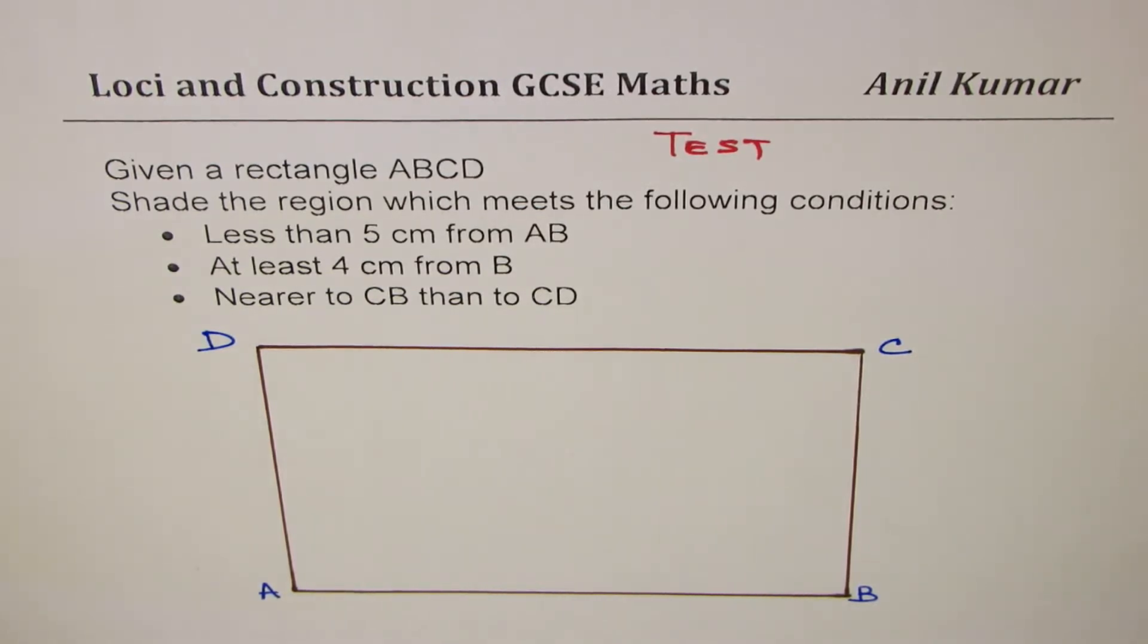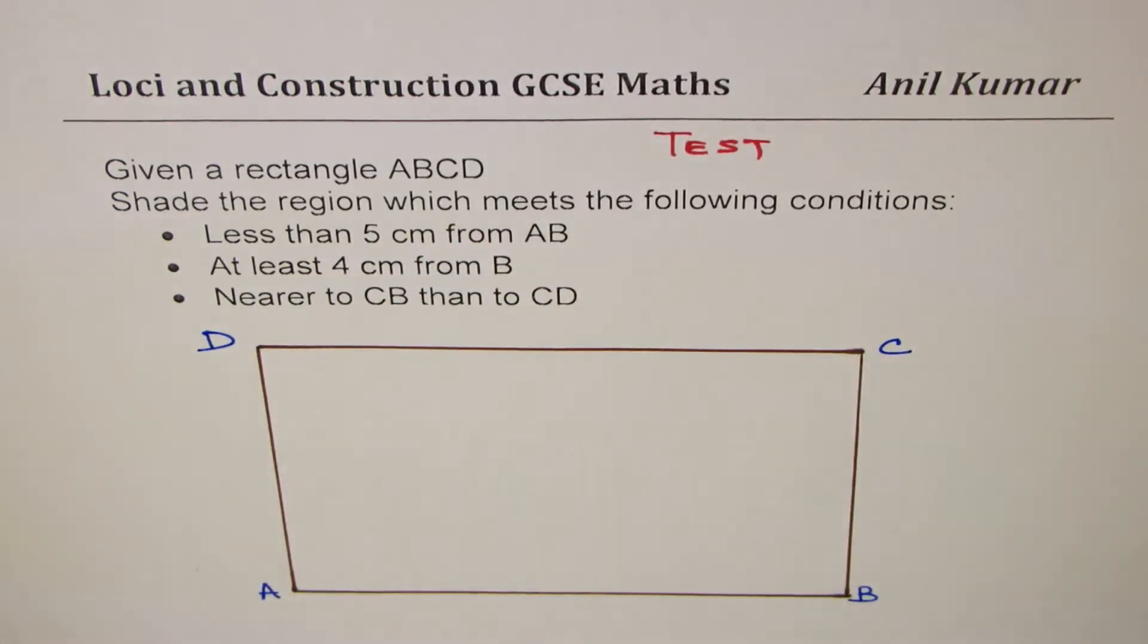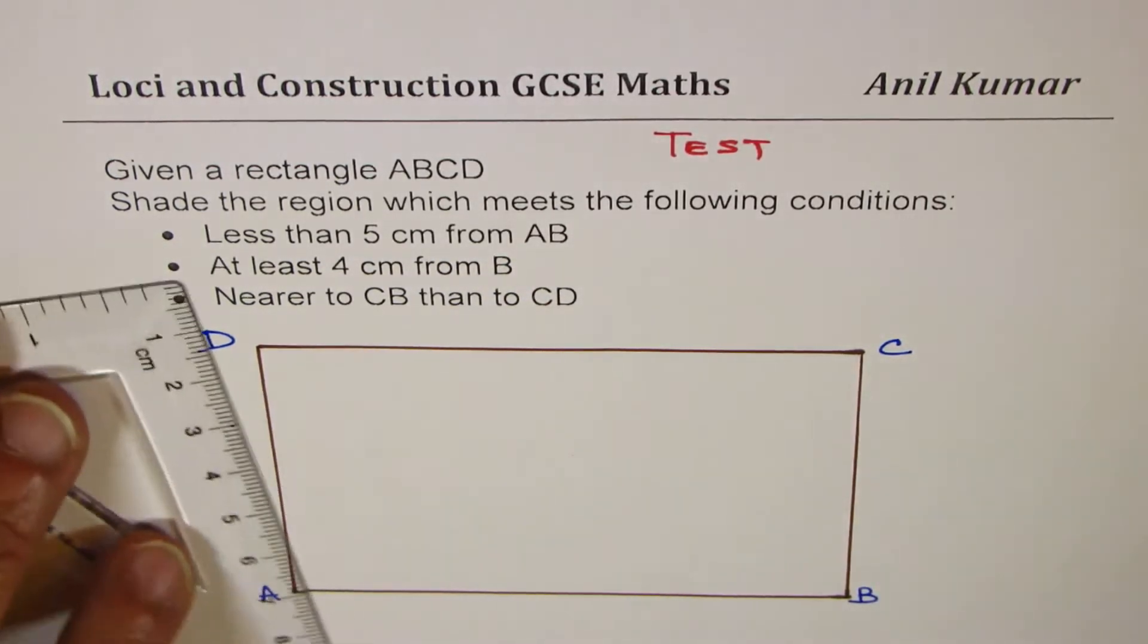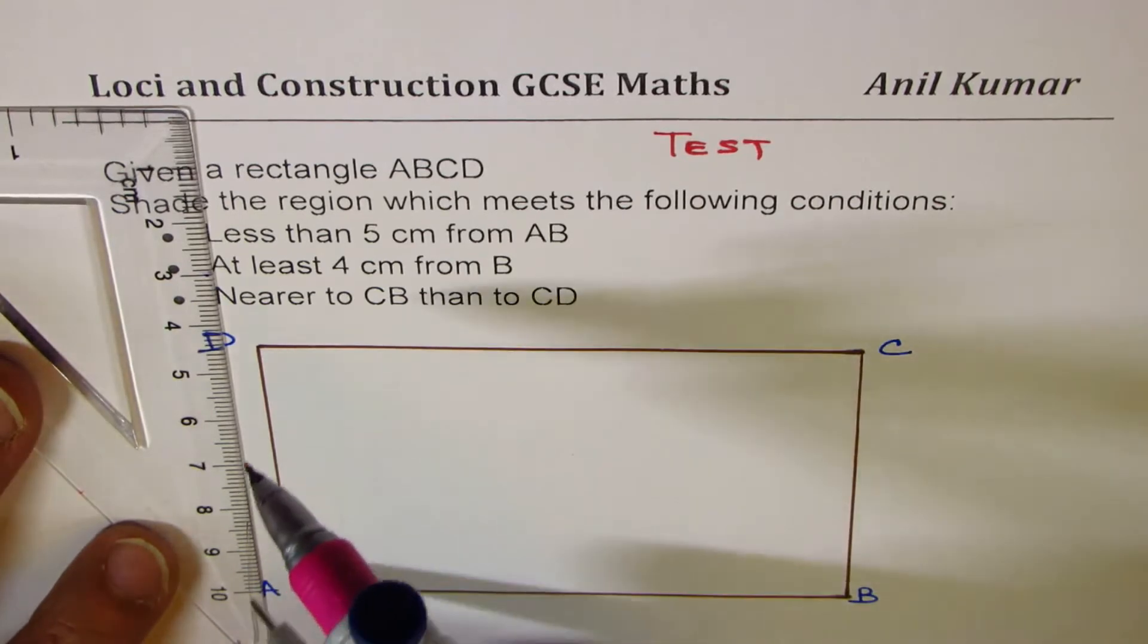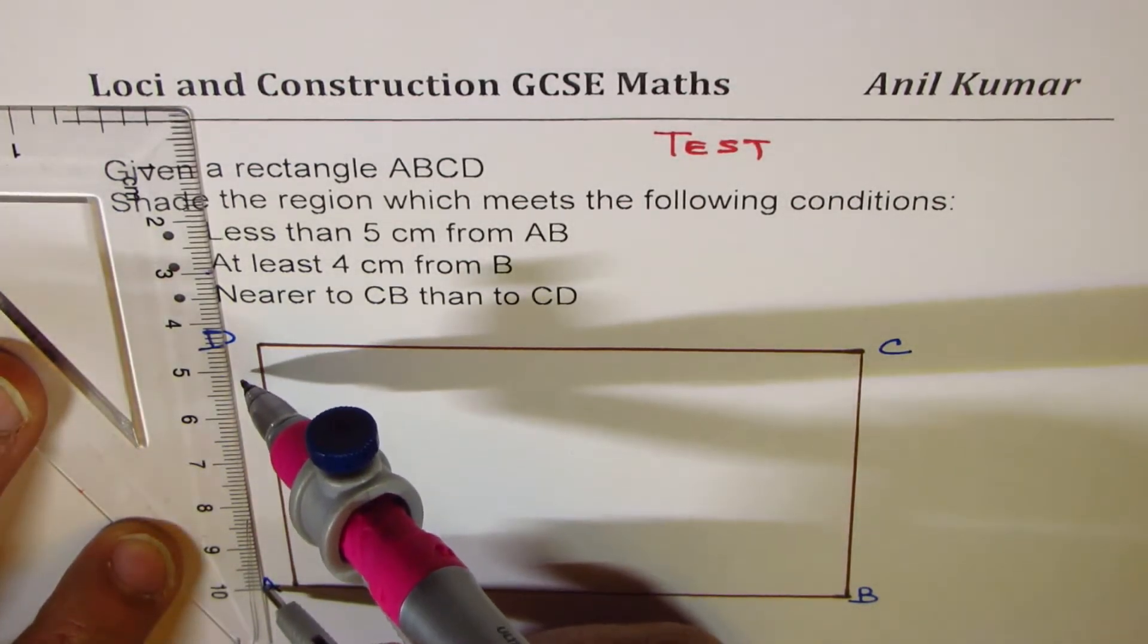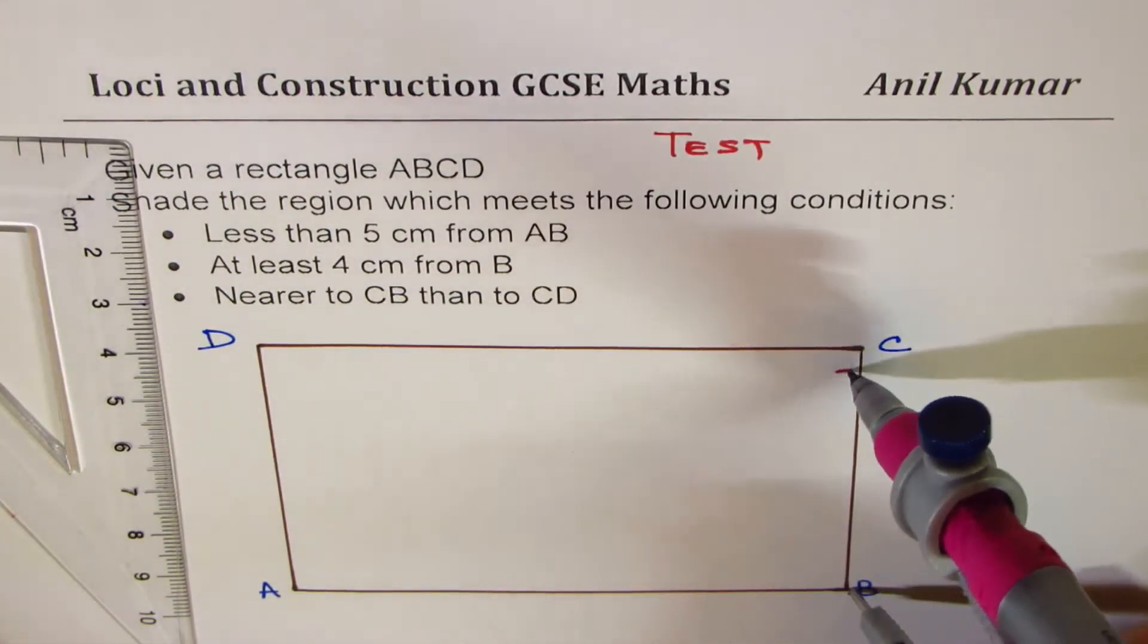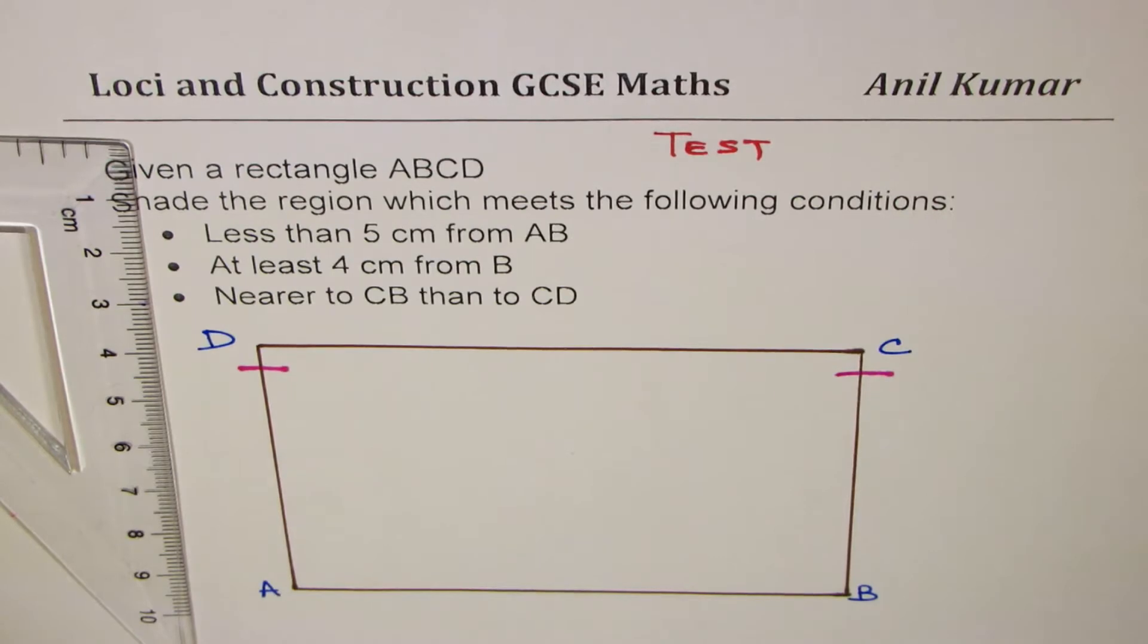We'll actually represent it with the help of loci, which will meet all this condition. So set of points which will meet all this condition. The first one here is to take 5 cm, less than 5 cm from AB. So I'm using this set square. We'll just open 5 cm. So I'm taking 5 cm, means from 0 to 5. So that becomes 5 cm for me. So we'll mark 5 cm from A and B.